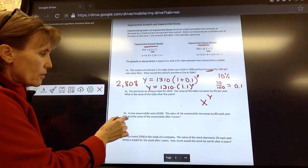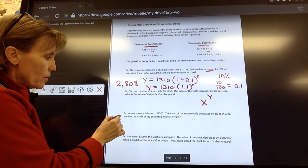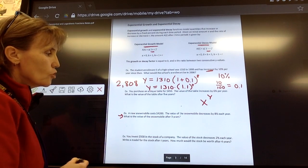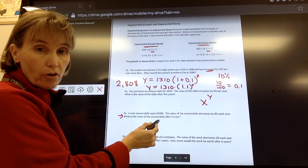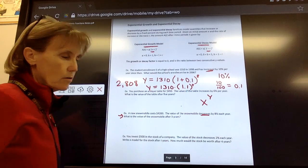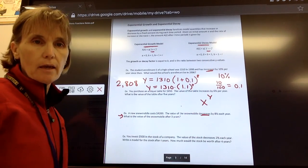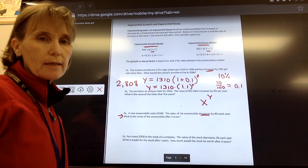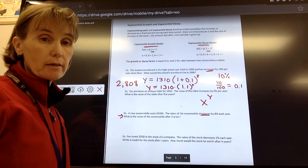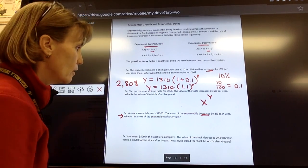I'm going to skip down here to this next one and go to the snowmobile example. It says a new snowmobile costs $4,200. The value of the snowmobile decreases. Since it's decreasing, I want to use the formula that's decay. Other words that you might see that indicate a decrease are depreciate. If something depreciates in value, it goes down or decay itself.